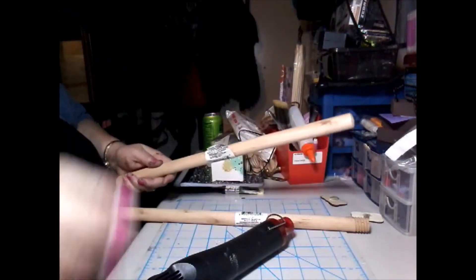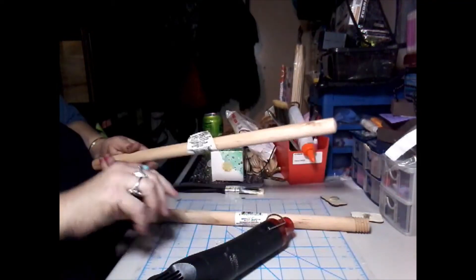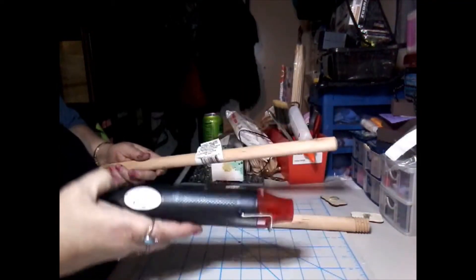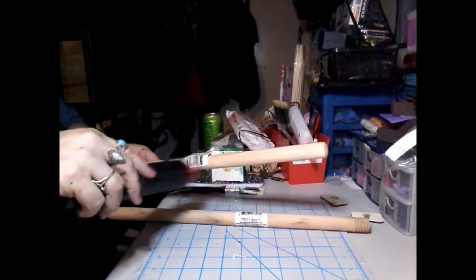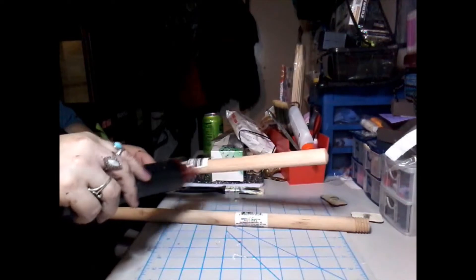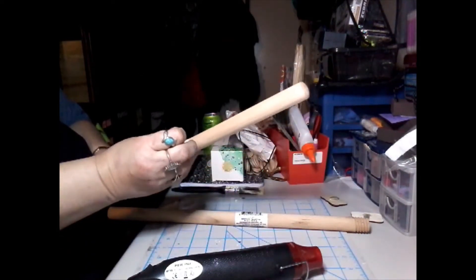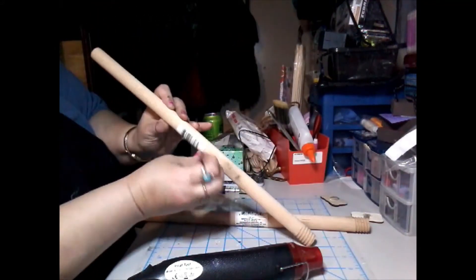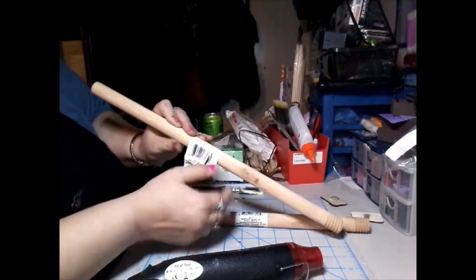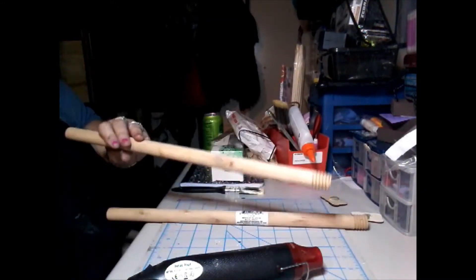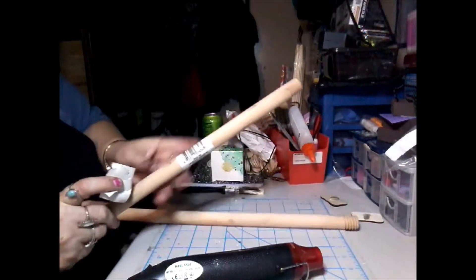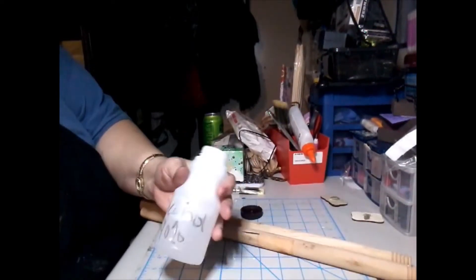I'm going to use my heat gun to take these stickers off. They come off really easy when you use a heat gun, but let me know if you have a better way to get it off. This makes it come off really easy though, and then I just peel it right off. These are the tops of the plungers from the Dollar Tree.